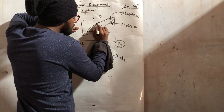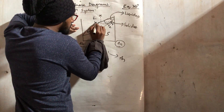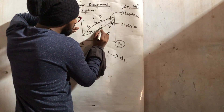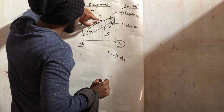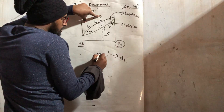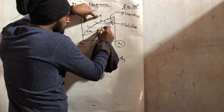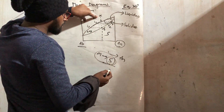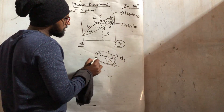Suppose we consider this point will produce solid of this composition. Suppose this is L2, this is L1, and at this point L3 will produce S3. Because this point lies directly above the initial composition, the entire melt will be converted into solid and the reaction will stop. This system will give the final solid.